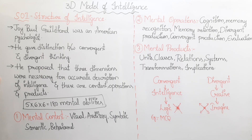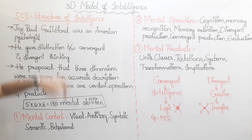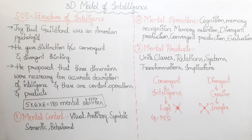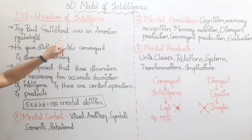The 3D model of intelligence means the Structure of Intelligence. This model is given by Guilford — full name Joy Paul Guilford. He was an American psychologist.